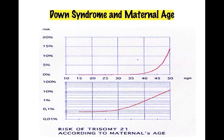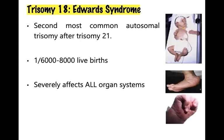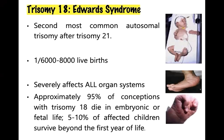The risk of having a Down syndrome child increases with the age of the mother. Edward syndrome (trisomy 18) has a high mortality rate due to the presence of cardiac and renal malformations, feeding difficulties, sepsis, and central nervous system defects. Those who survive beyond infancy experience severe growth retardation, occurring in between one in six thousand to eight thousand births.